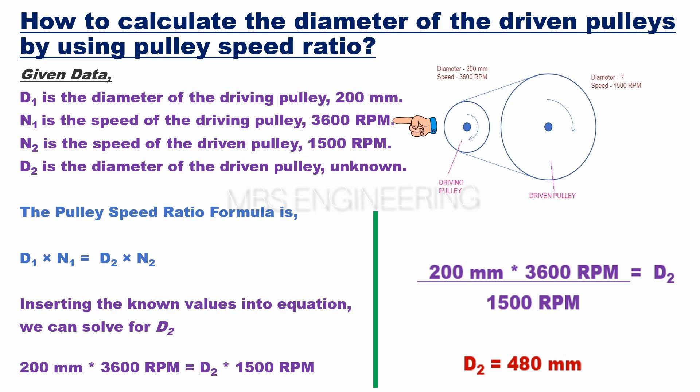N1 is 3600 RPM, speed of the driving pulley. N2 is 1500 RPM, speed of the driven pulley. D2 is unknown, diameter of the driven pulley.